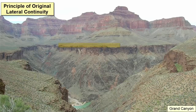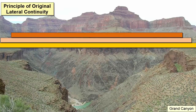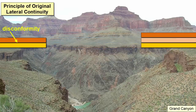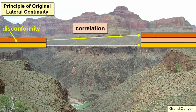The principle of original lateral continuity describes the tendency for lava flows and sedimentary beds to extend laterally in all directions until they thin to nothing or reach the edge of the depositional basin — in other words, they don't simply disappear. So if we have an unconformity in our local stratigraphy and one or more rock layers have been eroded, we can look to surrounding areas. If we can correlate the layers above and below the unconformity with those same layers elsewhere, we can use the intervening rocks to fill in the gaps in our local story. We call that process correlation.